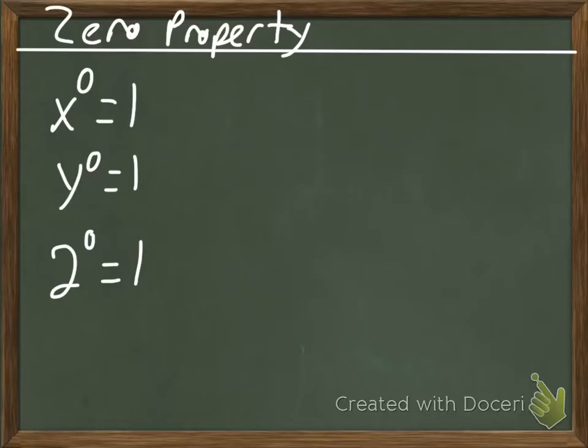Whenever you have an exponent that is a zero, like here we have x to the zero power, it's going to equal one. y to the zero power equals one. 2 to the zero power equals one.